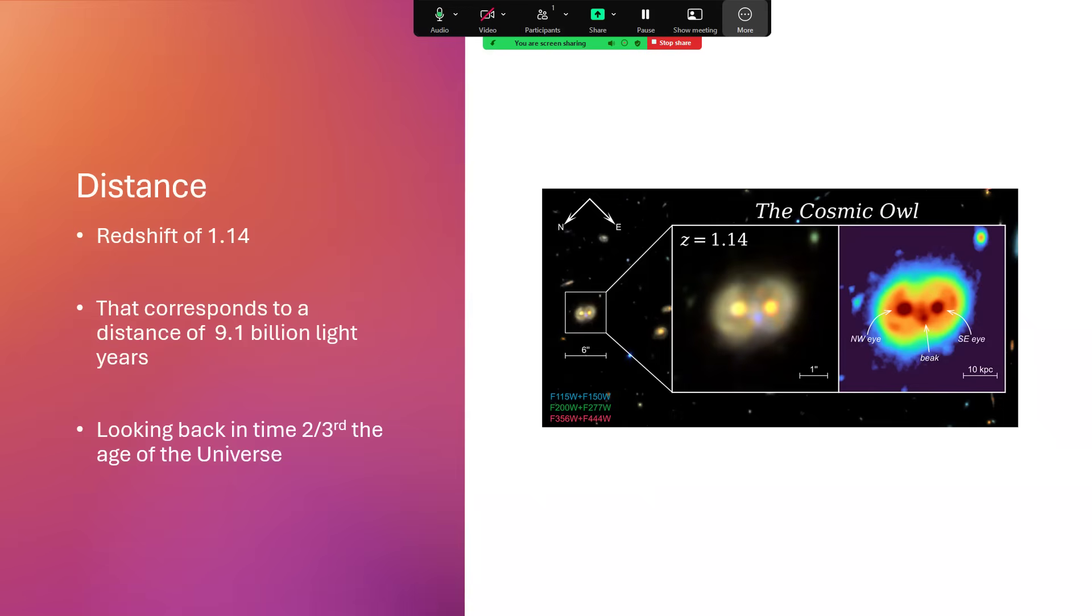This is entirely because the light from it, as revealed by looking at the spectrum, is redshifted by a factor of 1.14. That actually corresponds to the expansion of the universe having stretched the light by that amount as it was passing through. If you work all of that out, you get a distance of 9.1 billion light years.